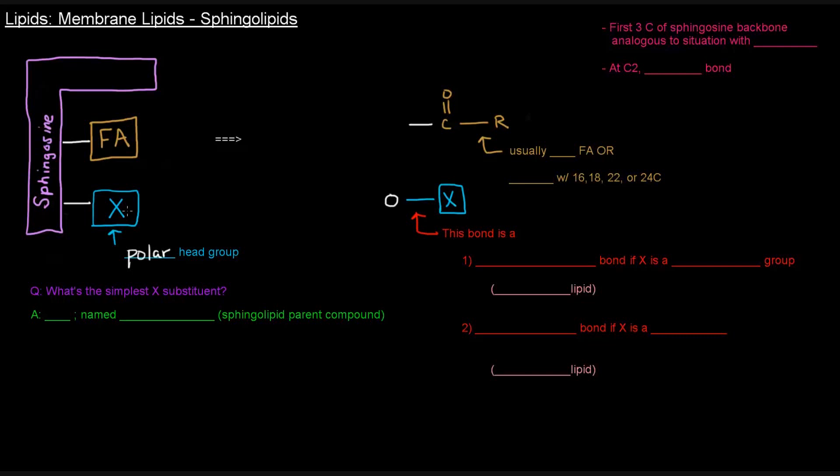X is going to represent some polar head group. So let's actually see what this looks like. Here is the sphingosine portion in purple. And we can see here that if I reveal the numbering of these carbons, this first one is carbon number one down here, and then there's two and three.